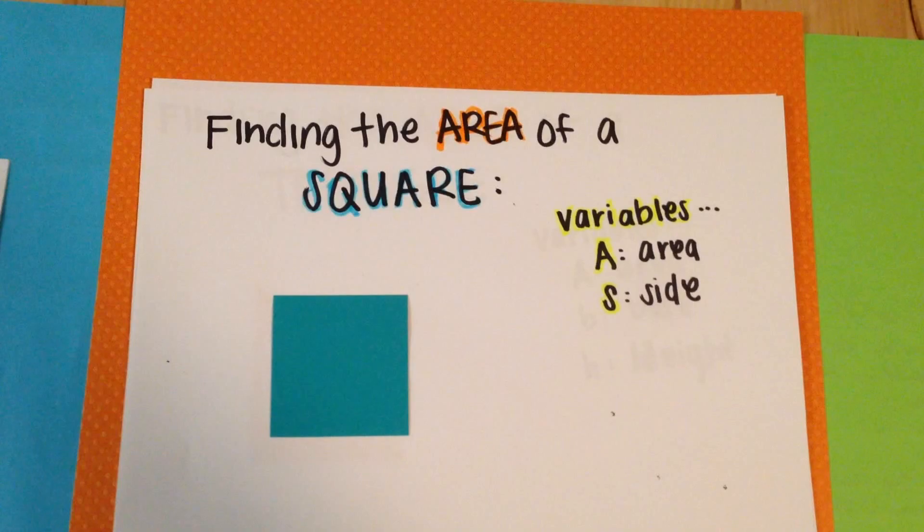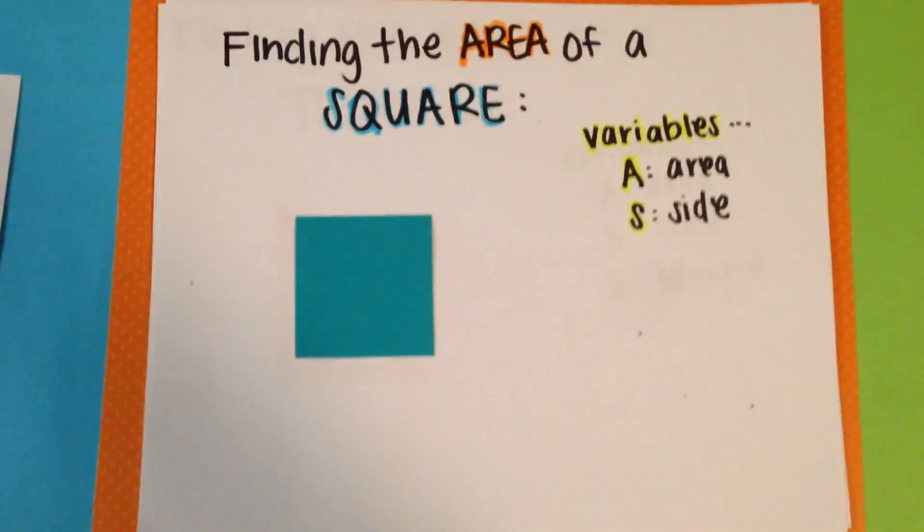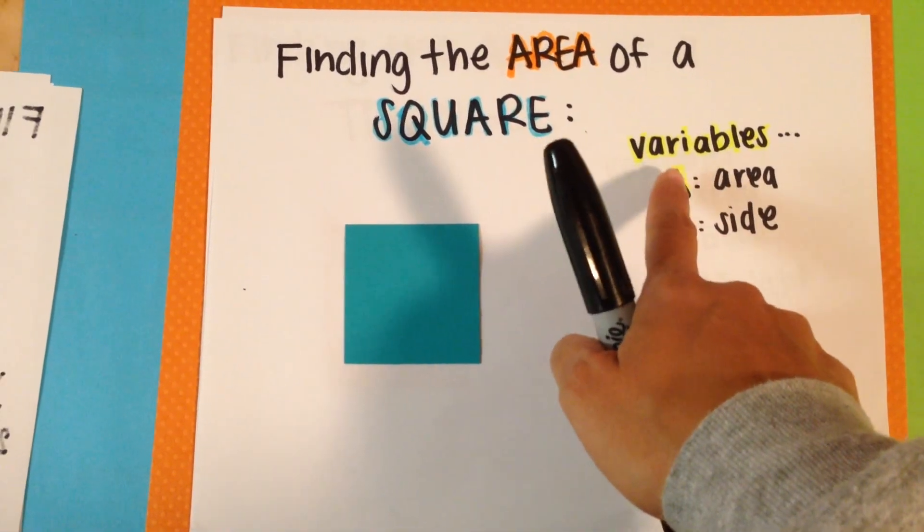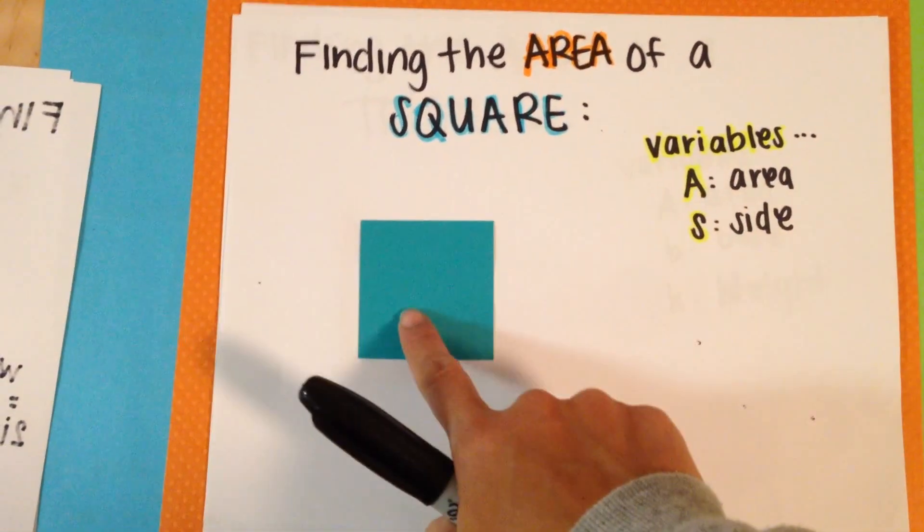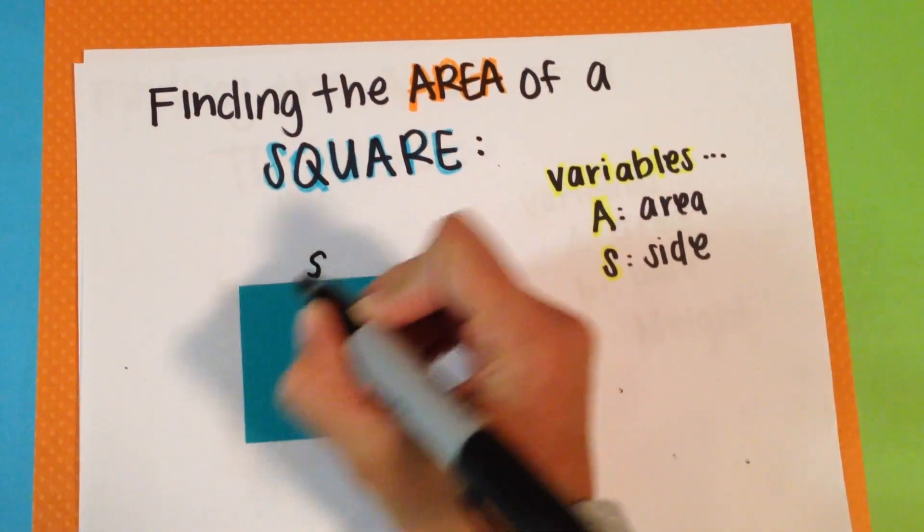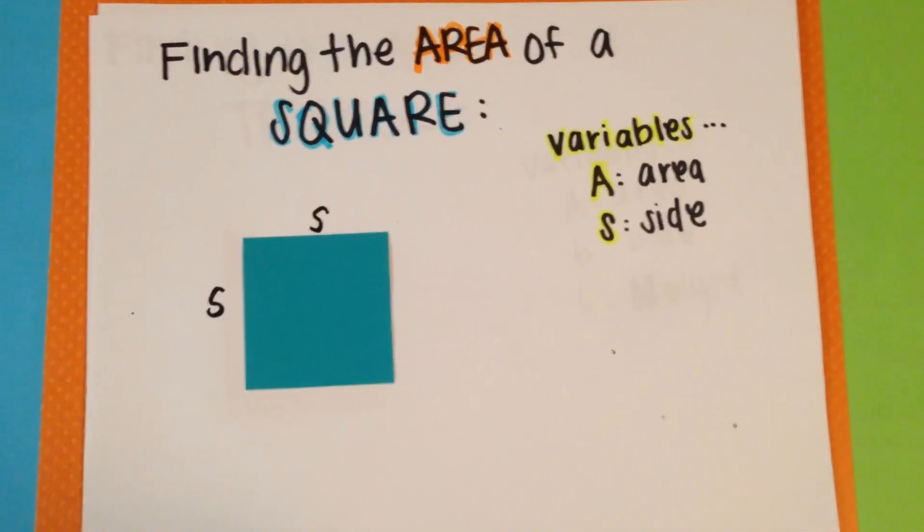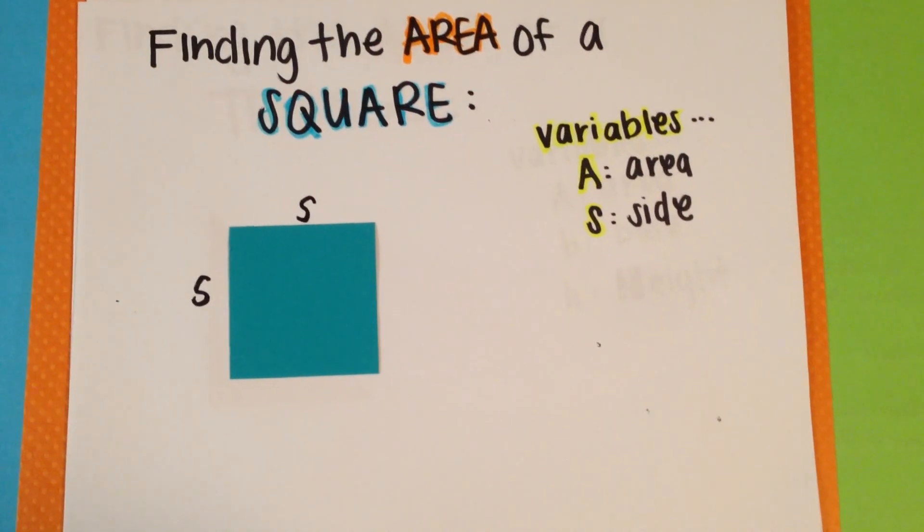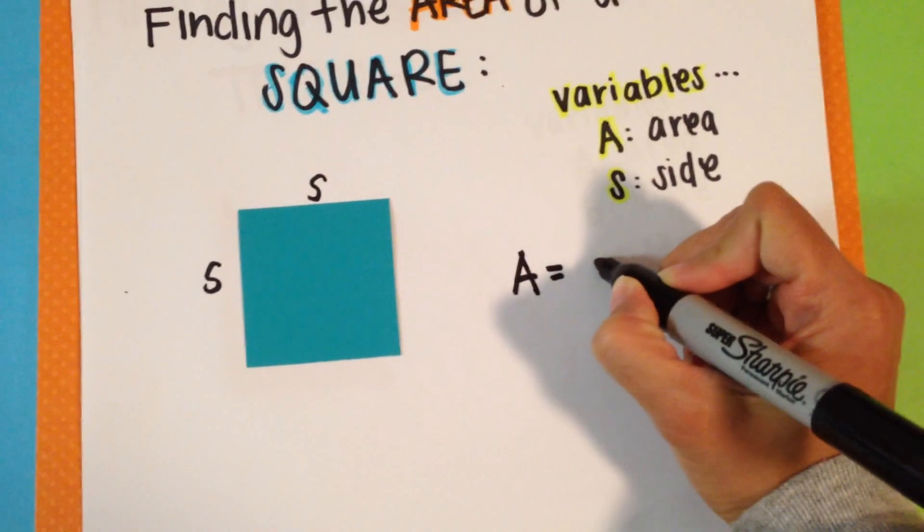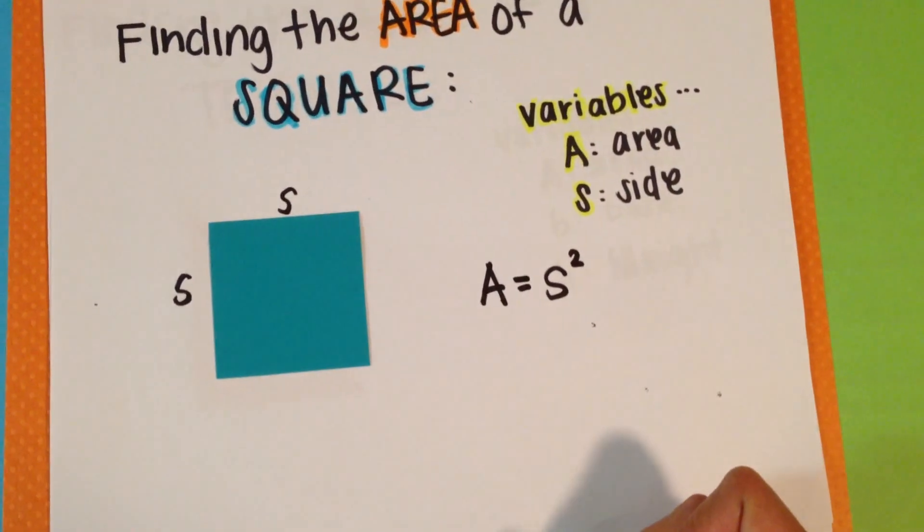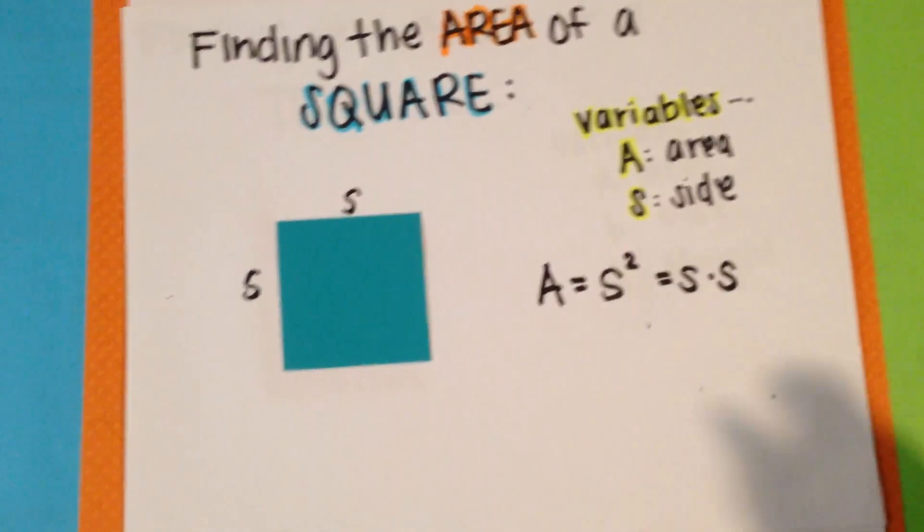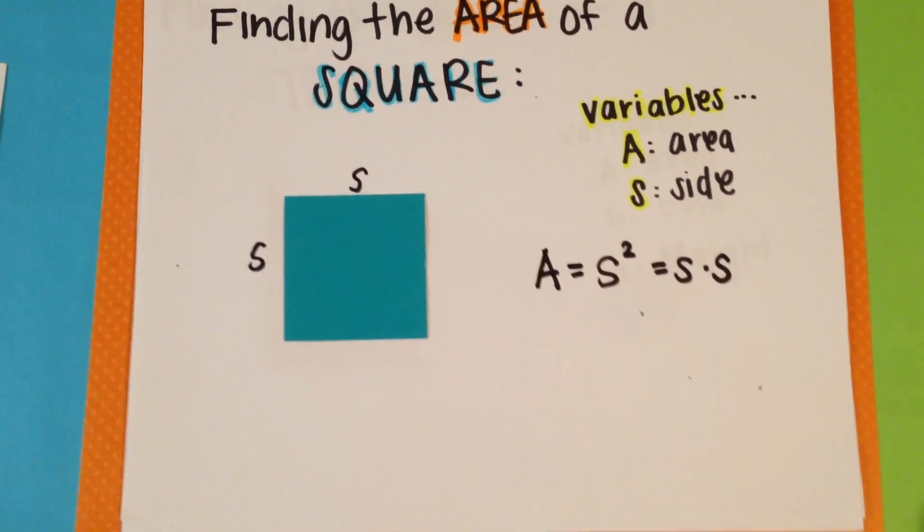Now let's find the area of a square. The variables that we need for the area of a square are area and side, and we have our square here. We label this square with side and side, since all four sides of a square are the same. The area of a square is side squared. Similarly, it will be side times side, since a square is a special case of a rectangle.